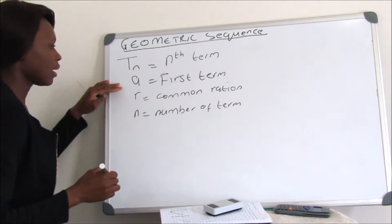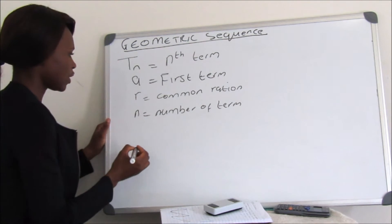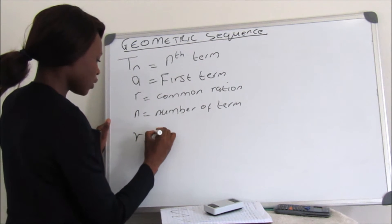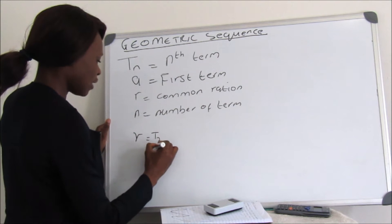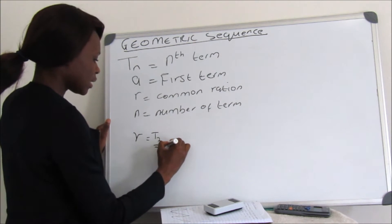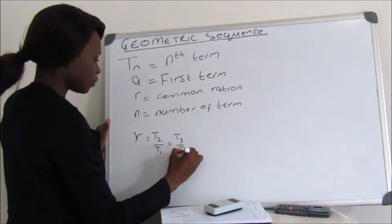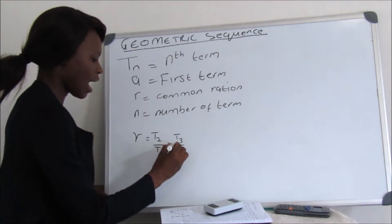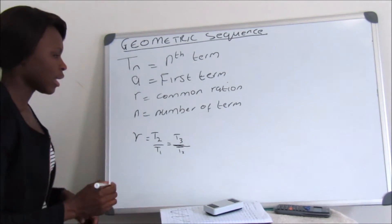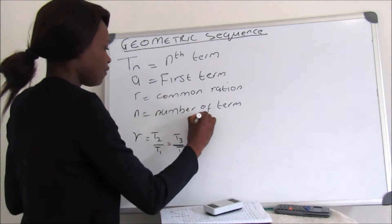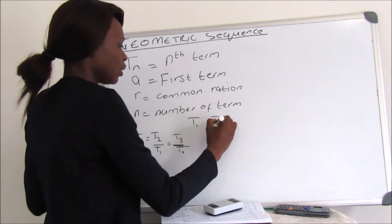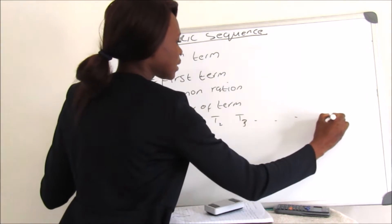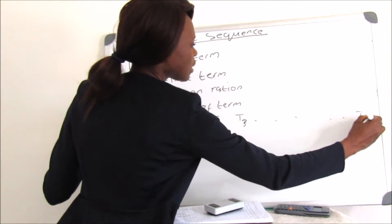To find R, which is the common ratio, R equals T2 divided by T1, which equals T3 divided by T2. If the answers are not the same, then the sequence is not a Geometric Sequence. Remember, T1 is the first term, T2 is the second term, T3 is the third term, up until TN, which is the nth term.